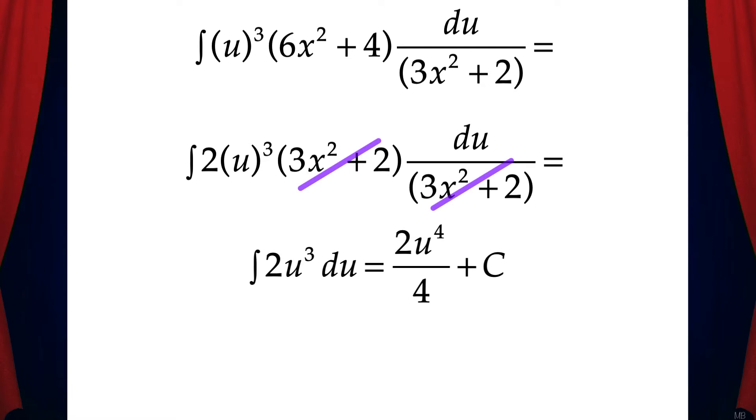And since we know that u equals x cubed plus 2x, we can substitute that back into our solution. And we get the quantity of x cubed plus 2x to the fourth over 2 plus c. And that's the final solution.